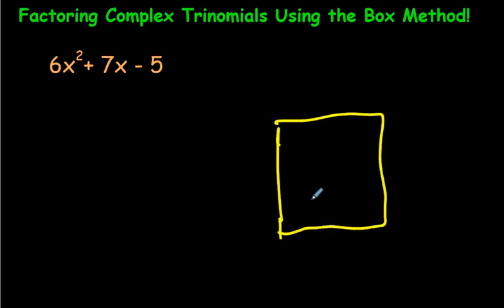So you start by drawing a box. And by the way, when you're doing these questions, always start by making sure there's no common factor to begin with. And I see a 6, a 7, and a 5. There's no common factor amongst these. So I can keep going with this box method right here. Now if you remember, we're going to write the first term right here.